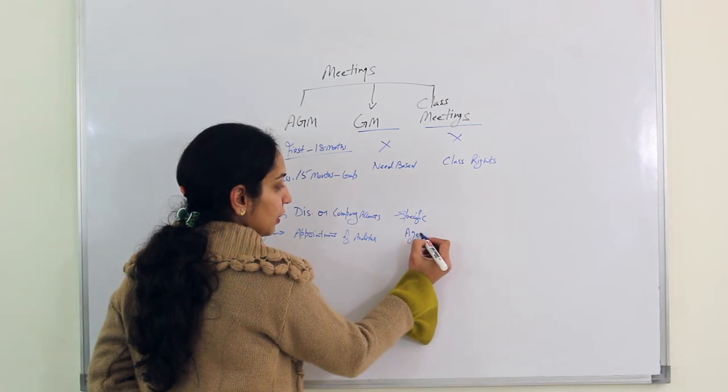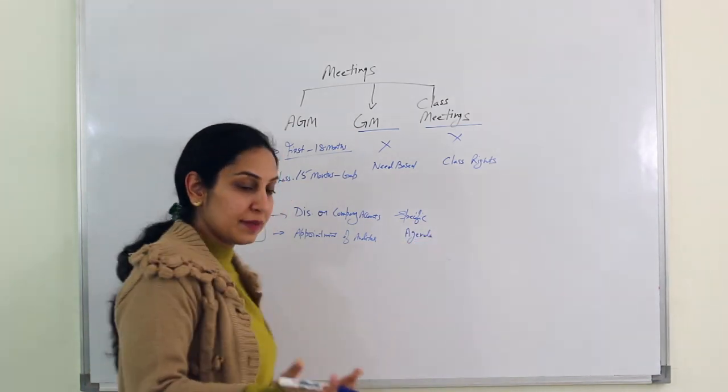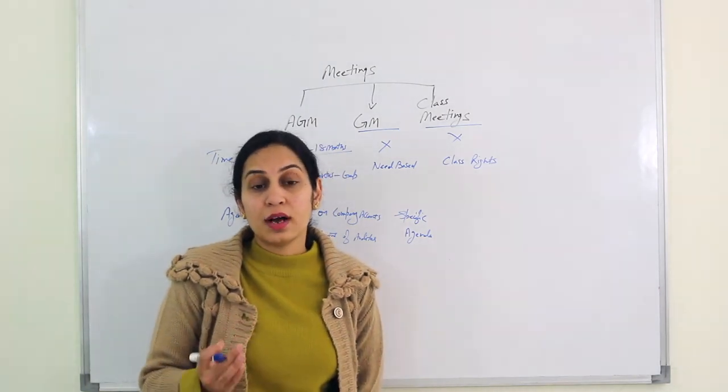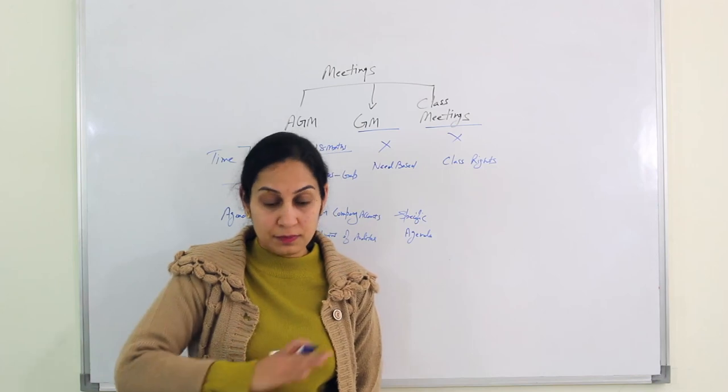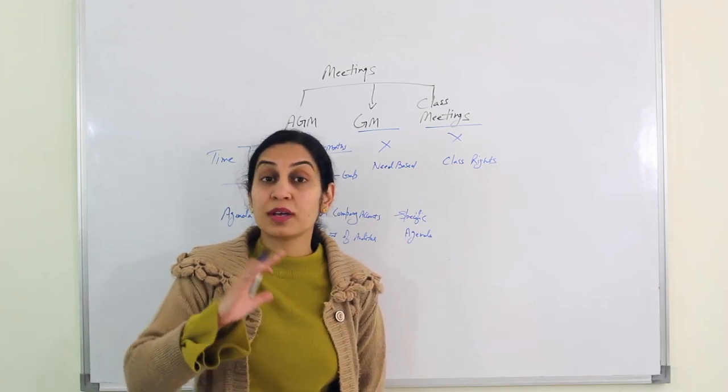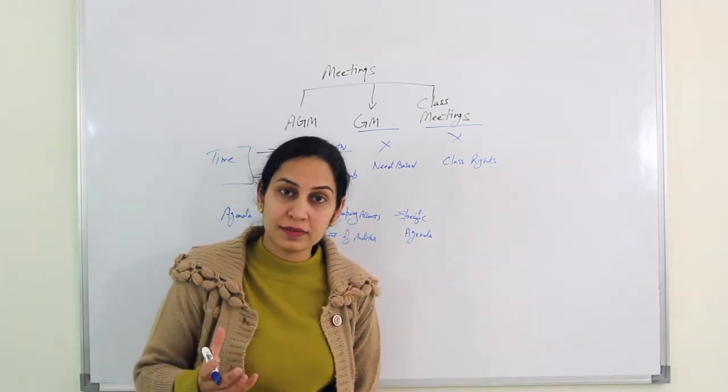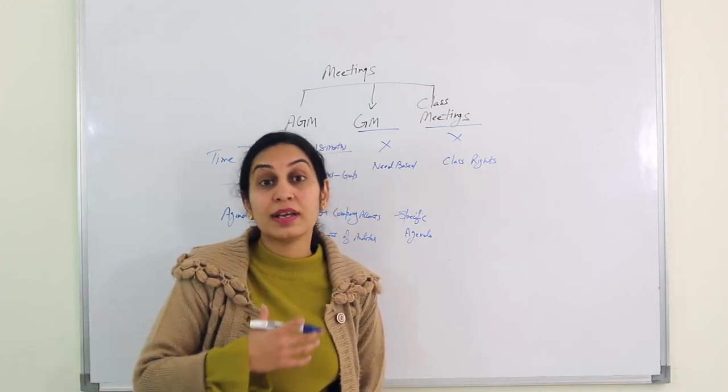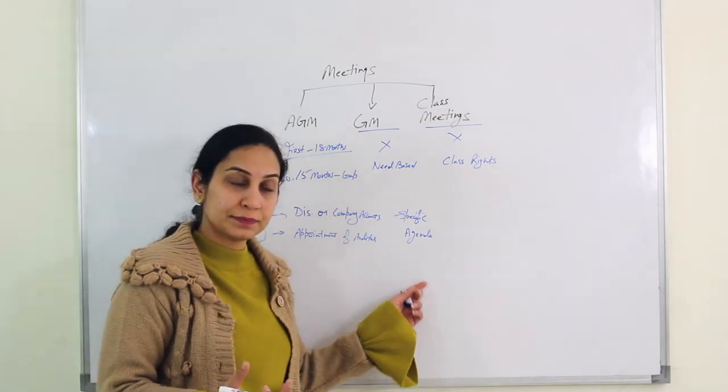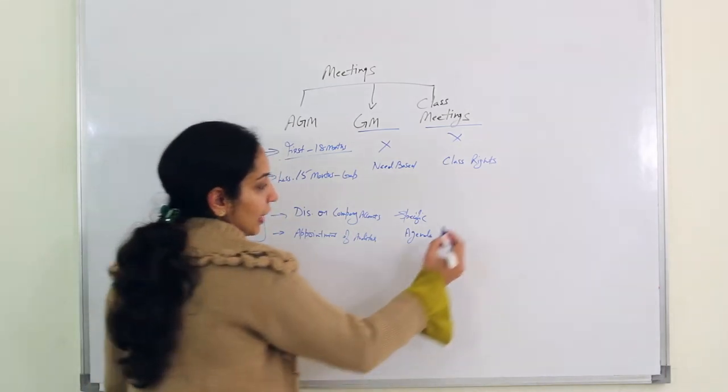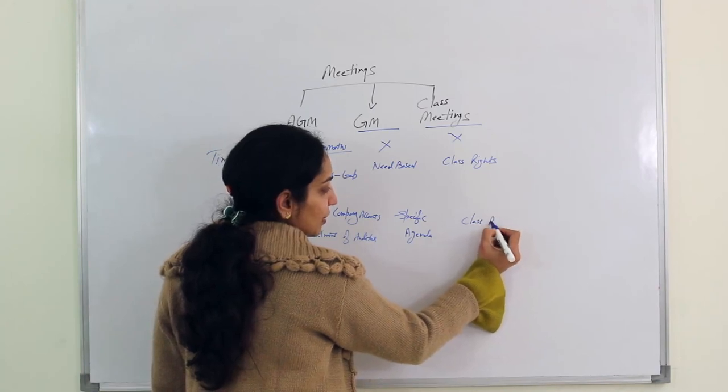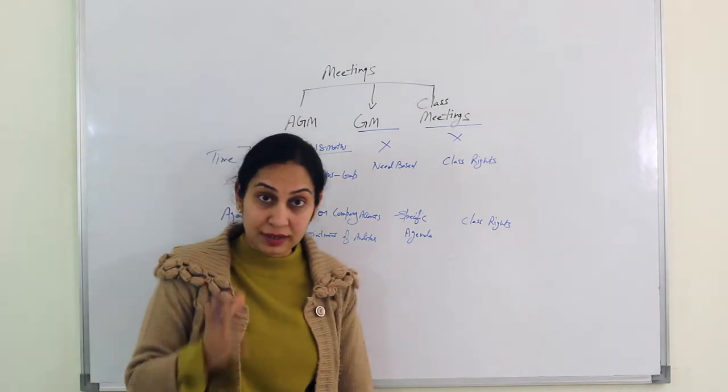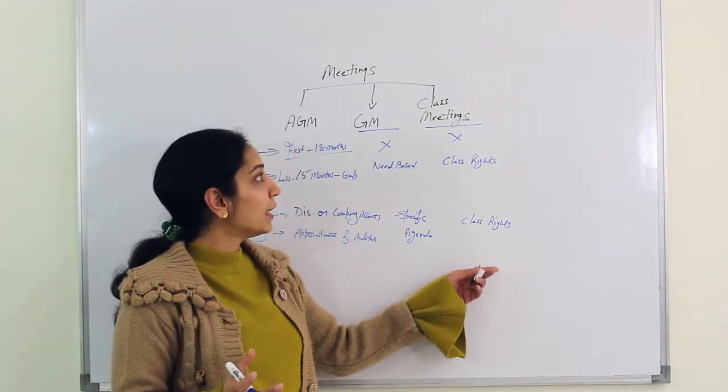Which is not covered under AGM. Specific agenda could be anything. For example a new director has to be appointed. Or an auditor has to be removed from the job middle of the period. The auditor's 12 months or tenure is not finished. An auditor either wants to resign or he's been removed. GM will be called. Class meeting agenda will be related to the specific class rights. So anything which is related to the specific rights of that class of shareholders, that is the agenda. Let's talk about notice.